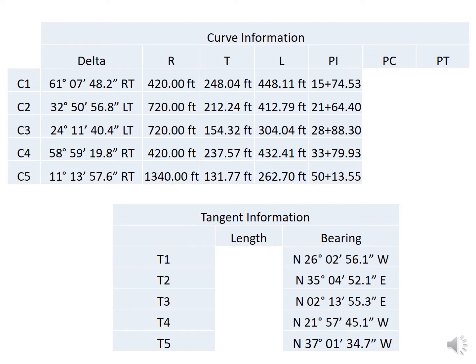Next, we can determine the PC using the information given in those curve tables. To find the PC, we start with the PI and subtract the tangent distance T. Each of those PCs for the five curves will be determined by PI minus T.